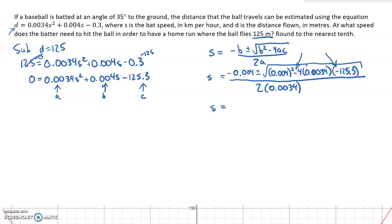So as I do that, I go 0.004 squared minus 4 times 0.0034 times negative 125.3. Under the square root simplifies to the square root of 1.704096. And then in the denominator, I get 0.0068.